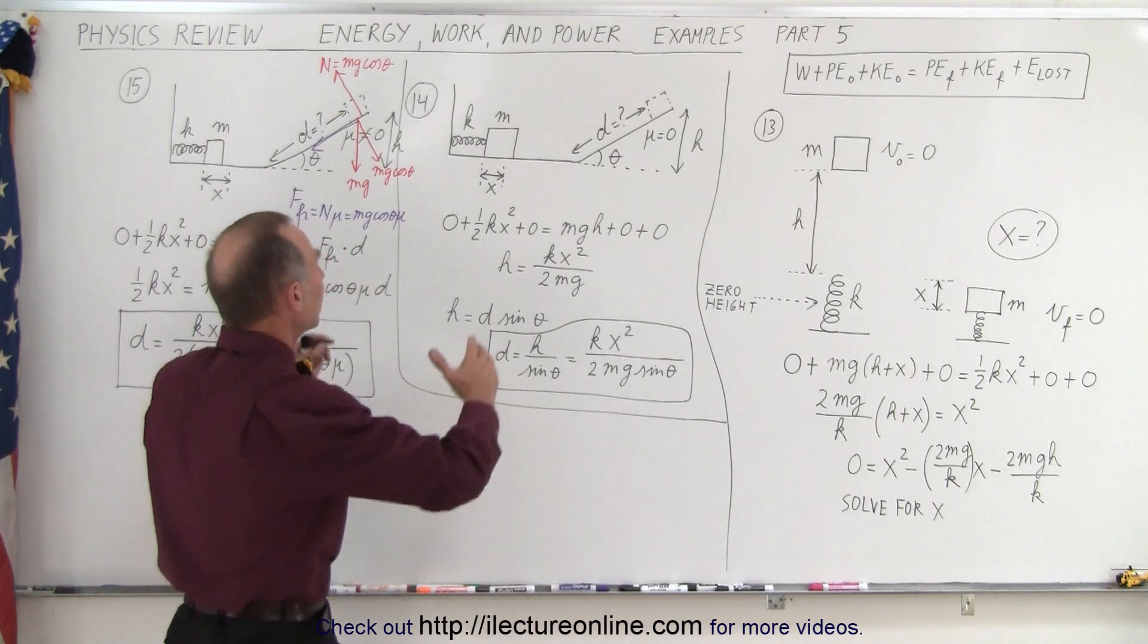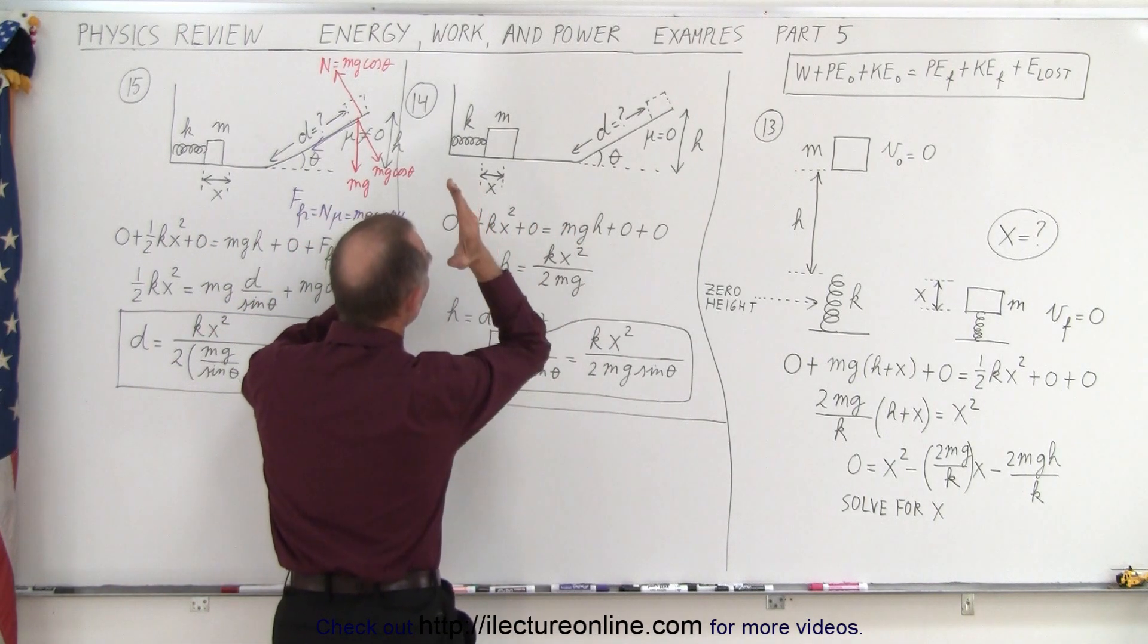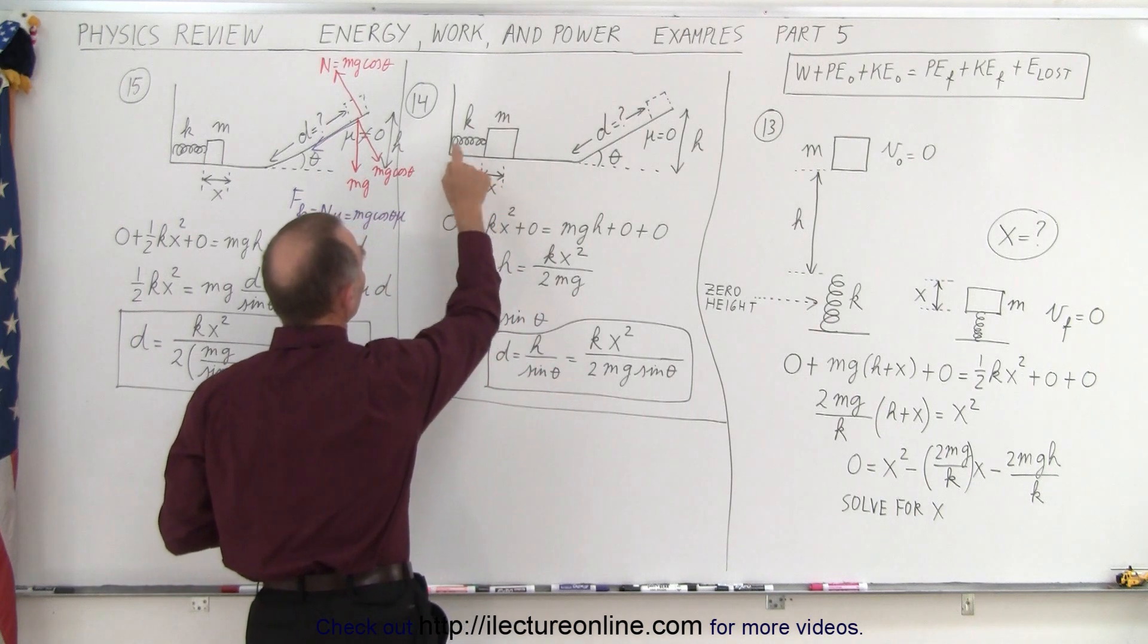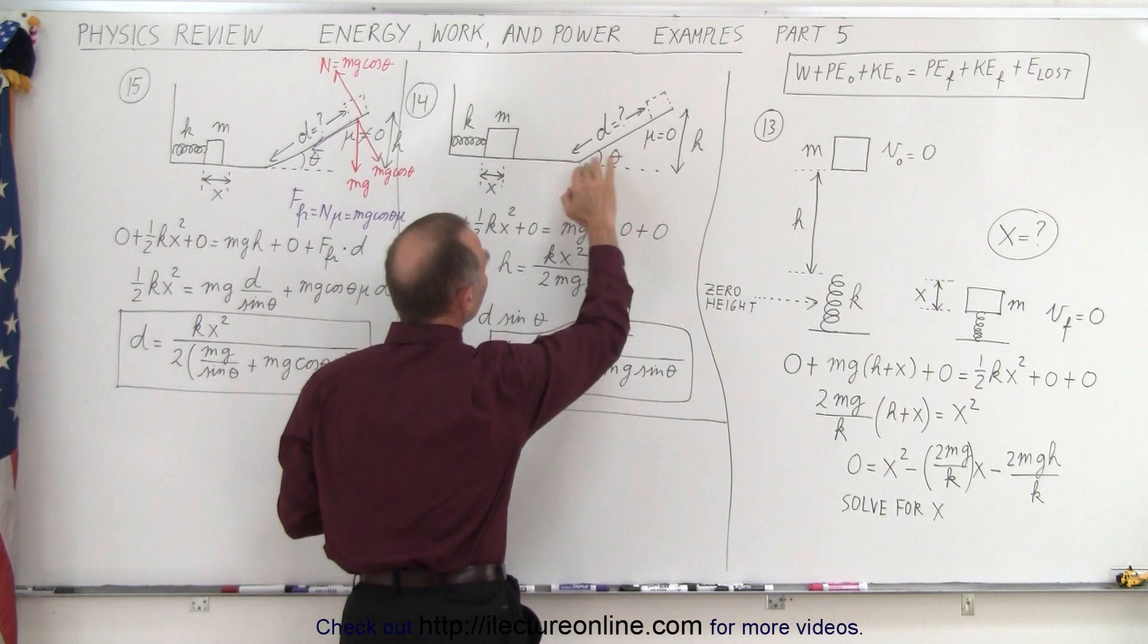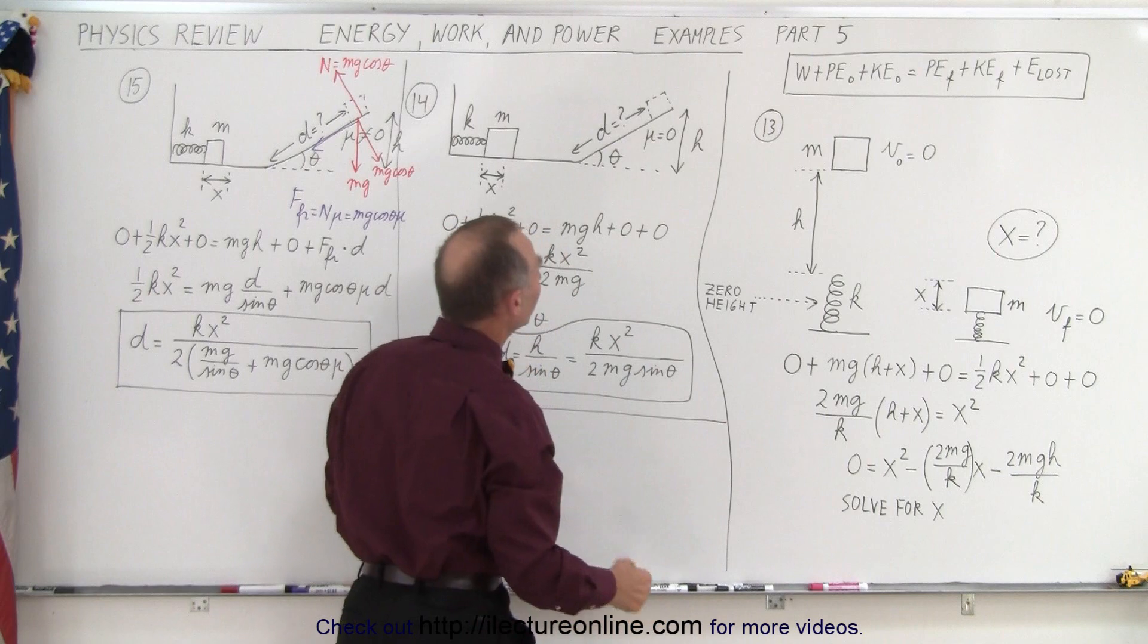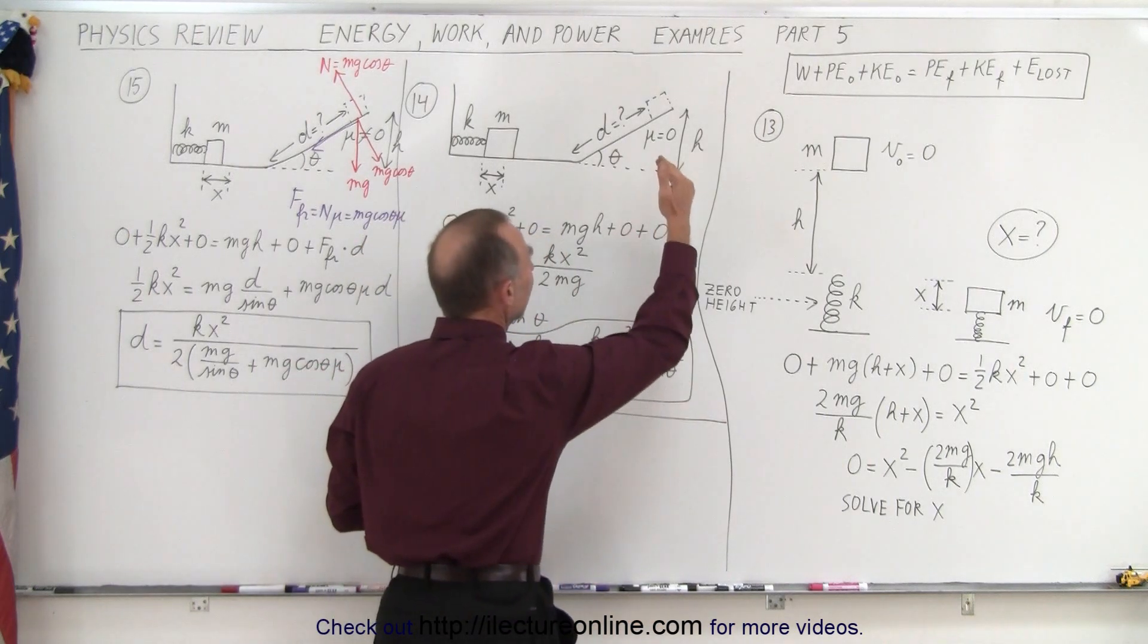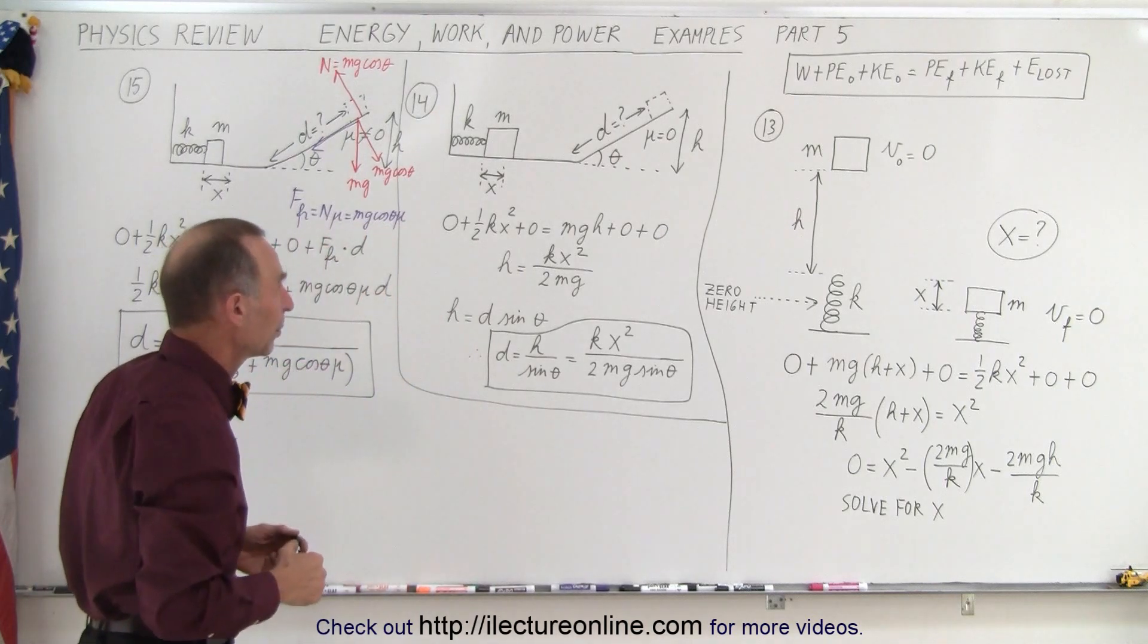What if we have a situation where we take a block, we compress a spring with it, we hold it in place, and then we let go? The spring has spring constant k, we compress it a distance x. The block goes—there's no friction anywhere on the surface—then it goes up an incline with angle θ. We reach a certain height h, and the question is: how far along the incline will the block slide before coming to a stop?